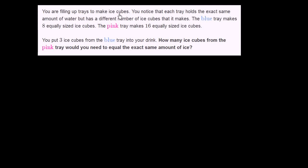You are filling up trays to make ice cubes. You notice that each tray holds the exact same amount of water, but has a different number of ice cubes that it makes. The blue tray makes eight equally sized ice cubes. The pink tray makes 16 equally sized ice cubes.